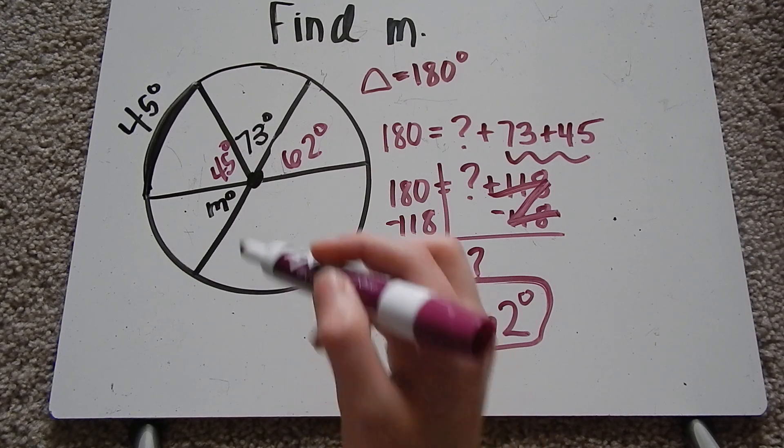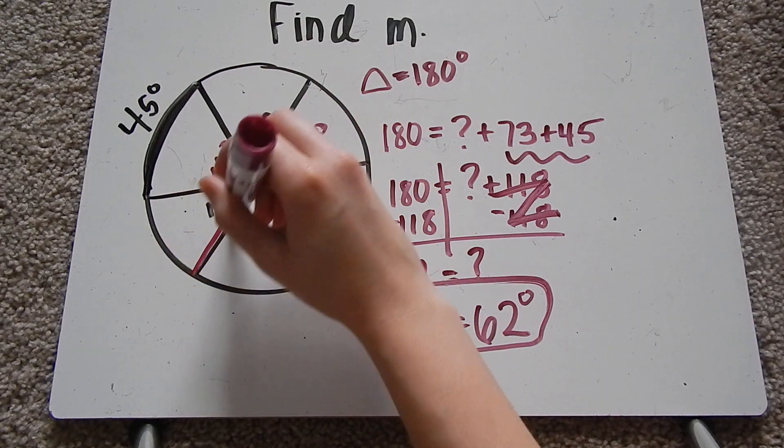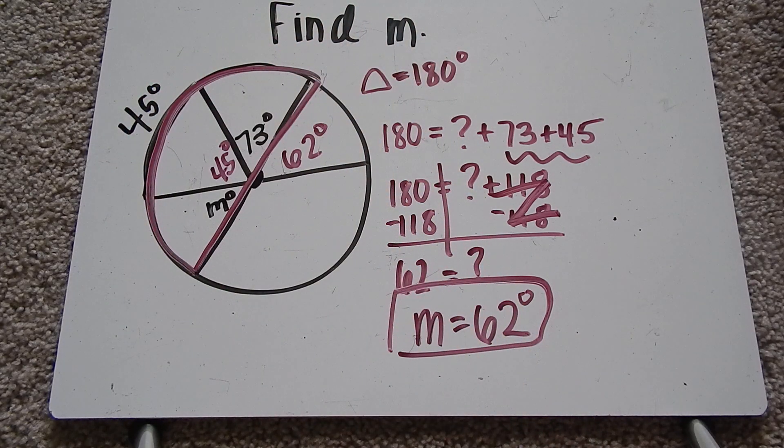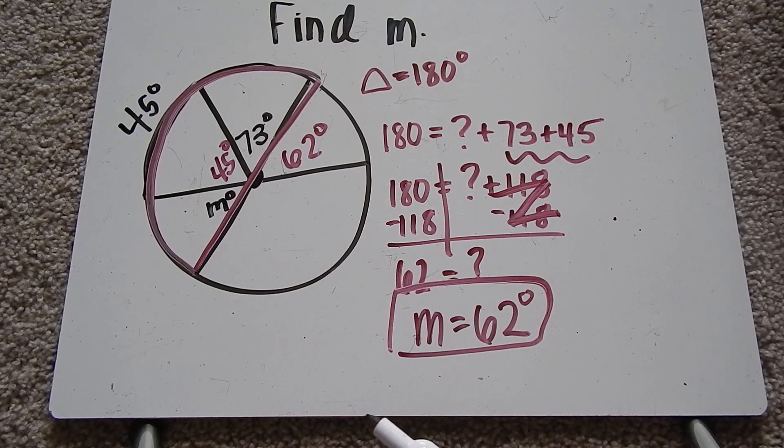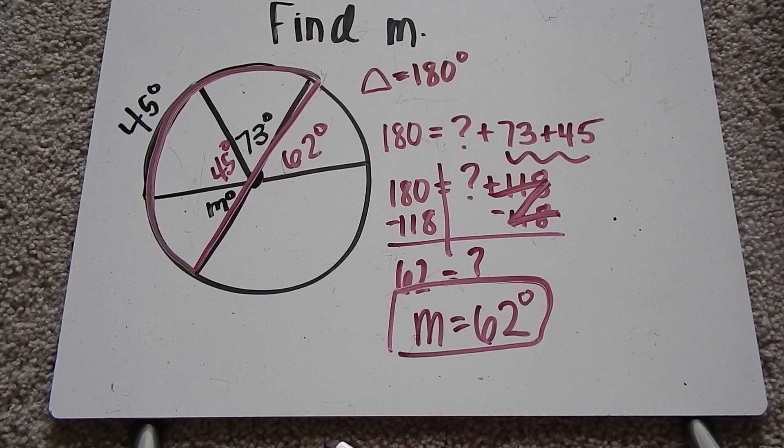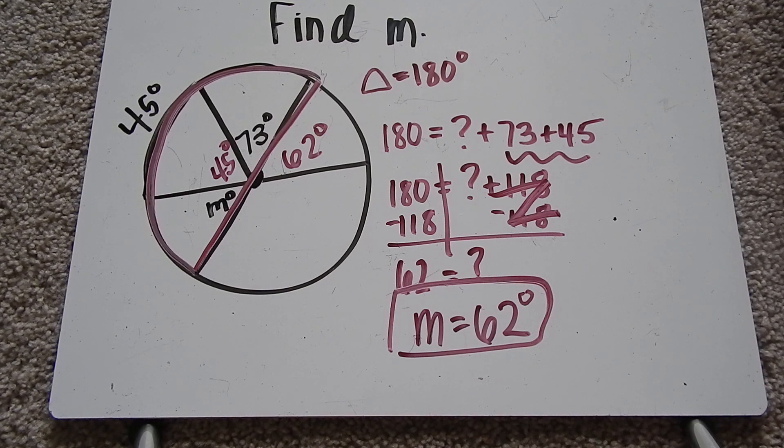You could have also looked at it as this right here is half of the circle. And you would have ended up getting the same answer because we would do the same problem and we still get 62 degrees. So it really doesn't matter. There's a couple different ways to approach it as long as you get the correct answer.